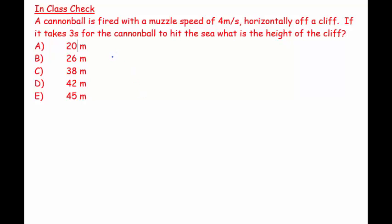Welcome. This is a projectile motion problem. We have motion in two axes, x and y plane, typically horizontal and vertical. This says a cannonball is fired with a muzzle speed of 4 m/s, horizontally off a cliff. So let's draw this.